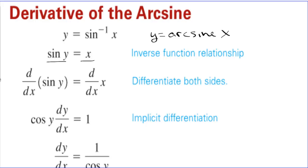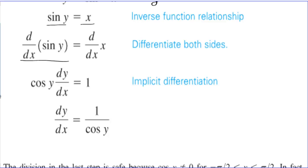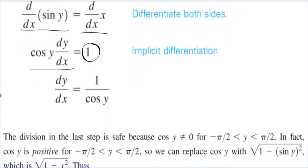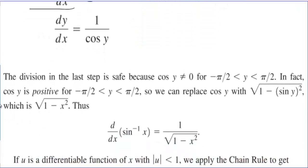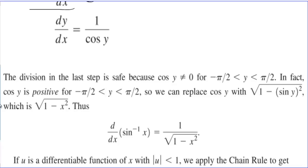If we take the derivative implicitly, we have the derivative of both sides. Here's the implicit part: the derivative of sine is cosine of y times dy/dx, and the derivative of x is 1. Then we divide by cosine of y. This division is safe because cosine of y cannot equal 0 — it will not equal 0 from negative pi over 2 to pi over 2. In fact, cosine y is positive on that interval.